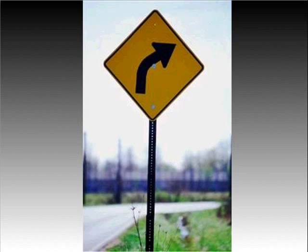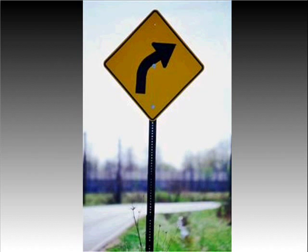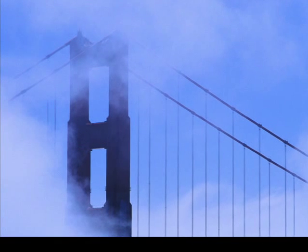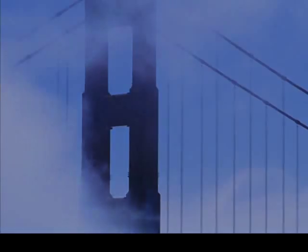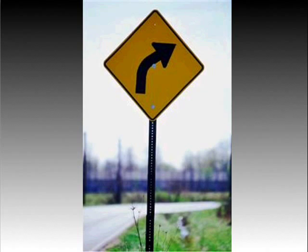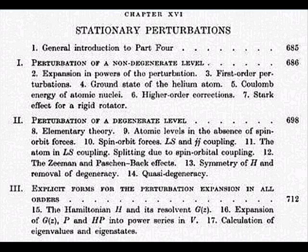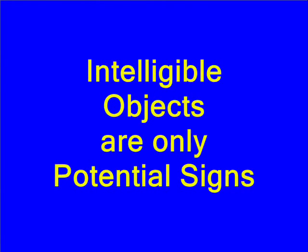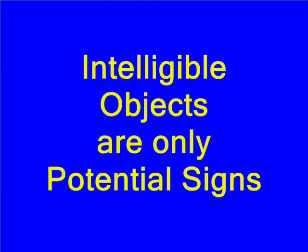For example, smoke is a means of knowing fire, road signs are a means of knowing that the road curves up ahead, and fog horns are a means of knowing that there are unseen objects with which we might collide. All of these kinds of objects — smoke, road signs, sounds in the fog, words in a book, the smell of gas — are only potential signifiers unless they actually cause somebody to know something.